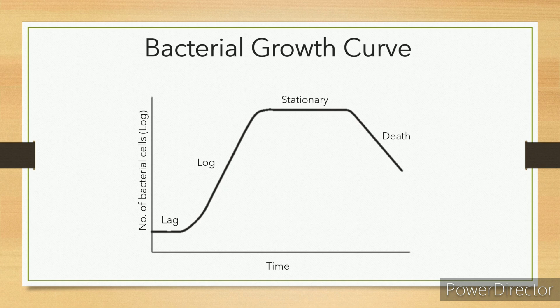Lag phase: The number of cells does not increase in this phase. The cell prepares for growth. Log phase: It is the phase of exponential growth. In this phase, the population doubles every generation. In this phase, they produce primary metabolites, which are compounds required for growth.